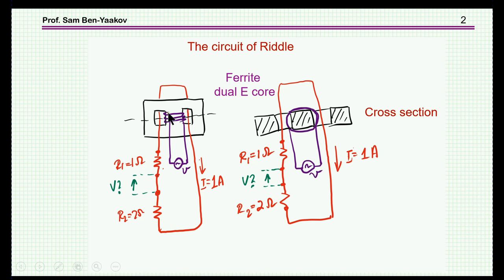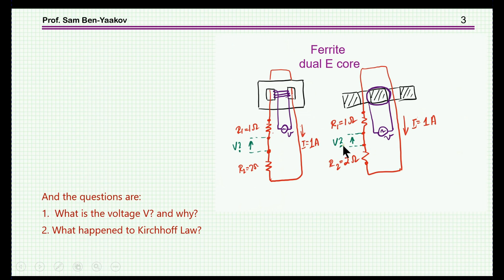We have a ferrite core here — it's a dual E-core, and here's a cross-section. We have a primary winding excitation which is imposing a flux, and then there's another winding. It's a single turn which has two resistors in series. We know that there is one amp passing through this loop, and the questions are: what is the voltage that you'll measure here, and why?